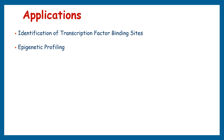ChIP sequencing allows us to map various histone modifications, such as acetylation, methylation, and phosphorylation, which play a critical role in shaping the epigenetic landscape. These modifications influence chromatin structure and gene expression, and their patterns can provide insights into cell differentiation, development, and disease states. ChIP sequencing can also be used to identify open and accessible chromatin regions, revealing areas of the genome more likely to be active in gene transcription.